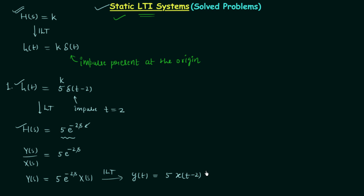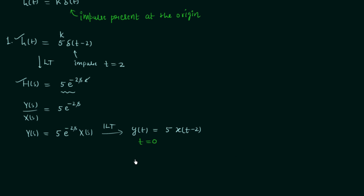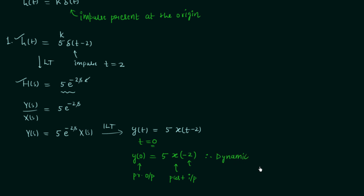From this system relationship we can also confirm the system is dynamic. If we set t = 0, the present output y(0) = 5·x(0−2) = 5·x(−2). With respect to t = 0, the instant −2 is a past instant of time. Therefore the present output depends on a past value of the input, confirming the system is dynamic. Since it is already an LTI system, the overall system is a dynamic linear time-invariant system.